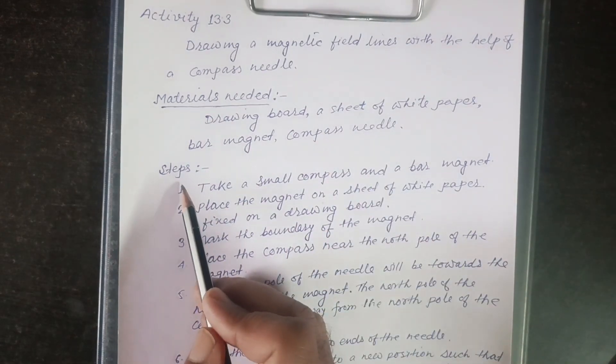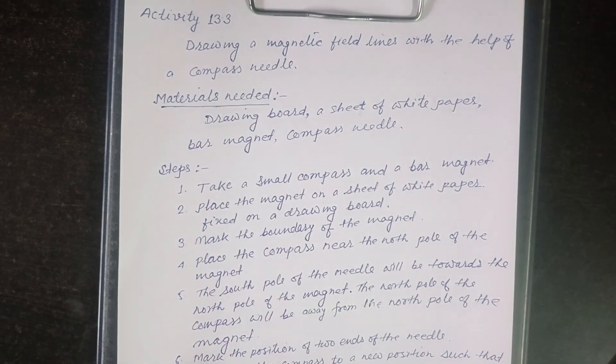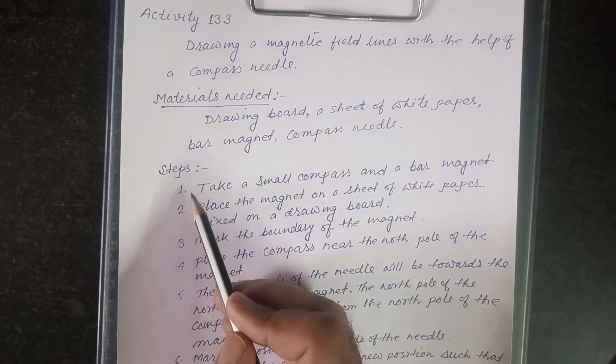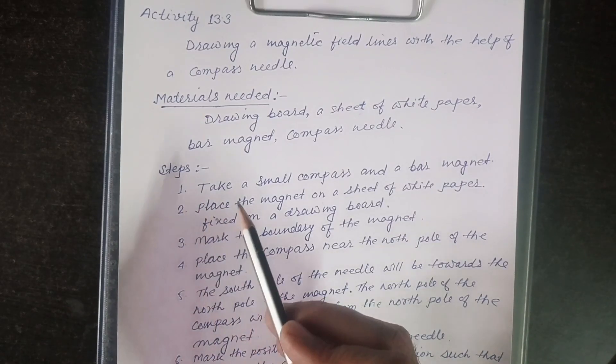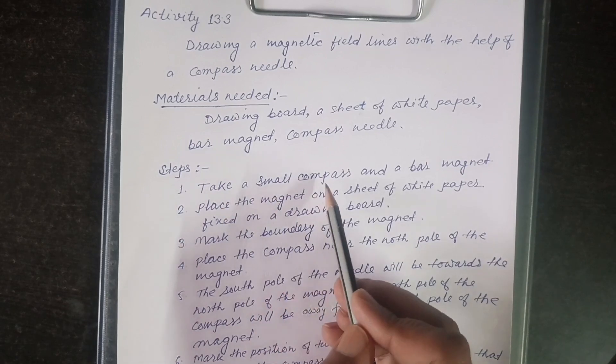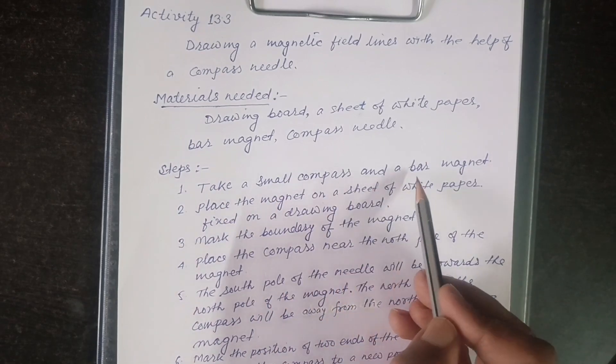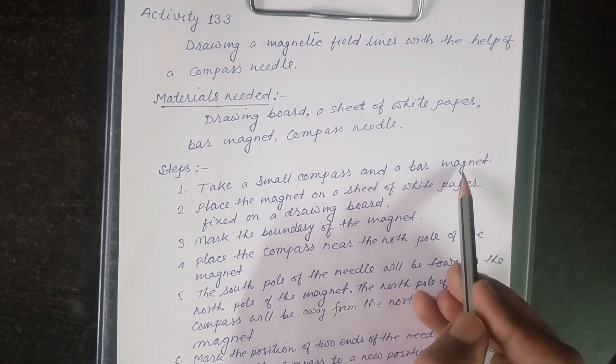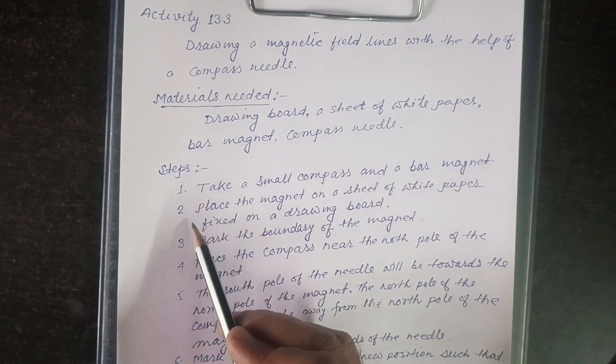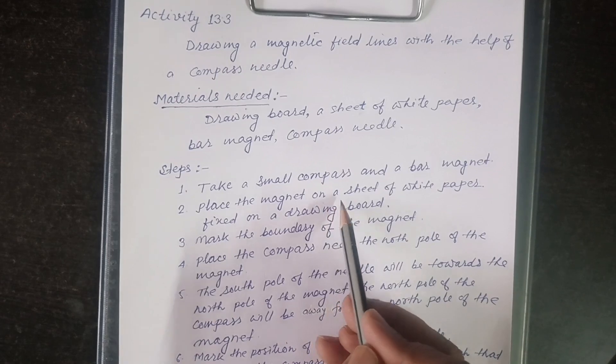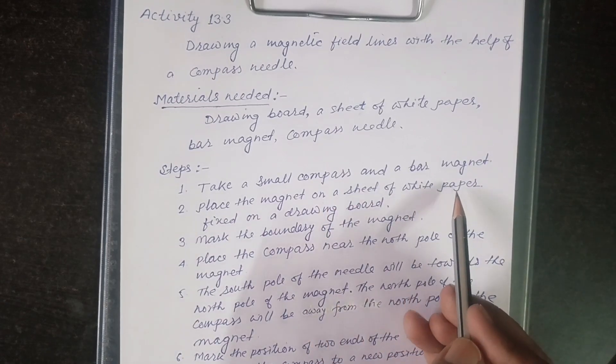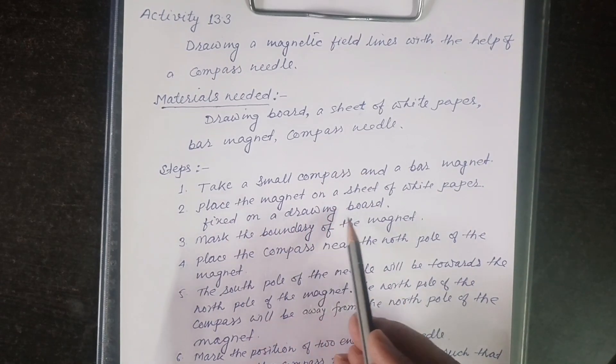In this activity, many steps are there which are to be followed. So let us discuss one by one. Step number one: Take a small compass and a bar magnet. Number two: Place the magnet on a sheet of white paper fixed on a drawing board.